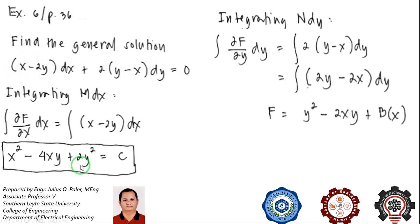If you compare this to our answer, we have our 2XY and our Y squared, so we need to find our B of X.